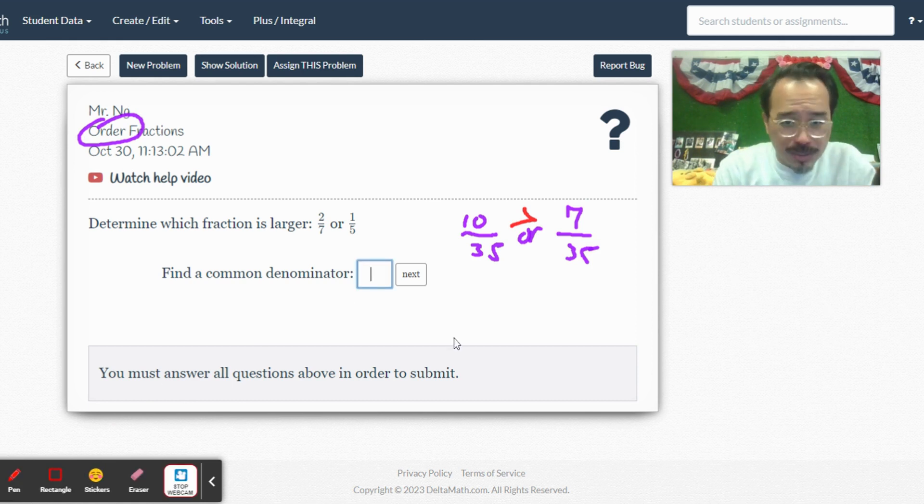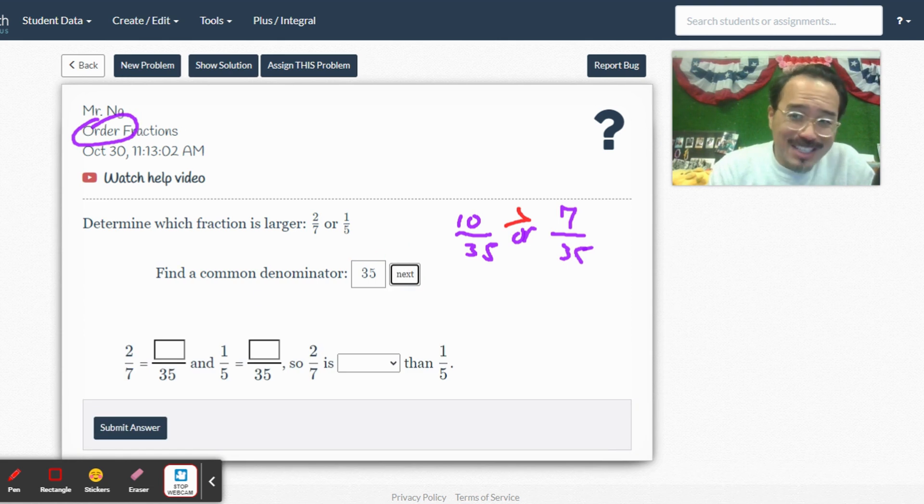So, here I'm going to find a common denominator, which is 35. Now, notice, it didn't say least common denominator. It doesn't have to be the least. So, if that would make your life easier by solving it faster, then by all means, don't spend too much time looking for the LCD, the least common denominator. Now, we did the math already. So, I'm just going to do it here. So, now, 2 7ths is greater than 1 fifth, right?